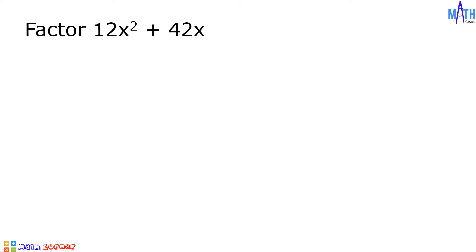Example number 1, let us factor 12x squared plus 42x. Our first step is to determine the GCF, or the greatest common factor. We will be using prime factorization in this example.